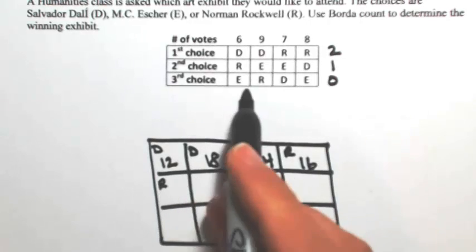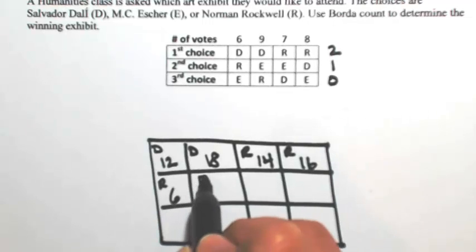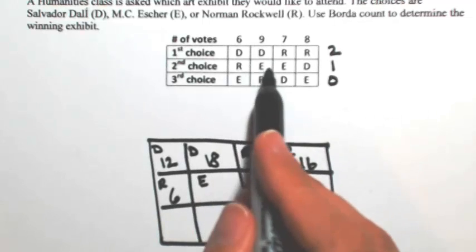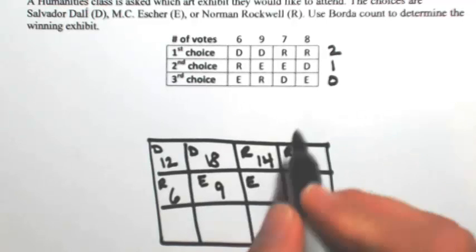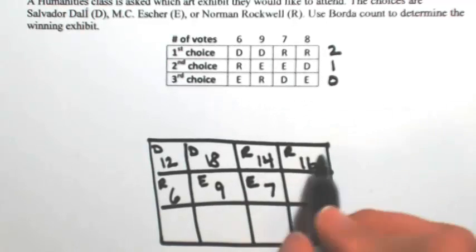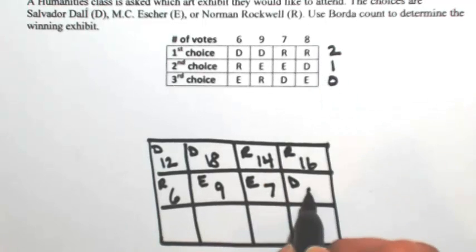In the next row there, we have R getting six votes worth one point, so six. E would have nine worth one point, so nine. E would have seven worth one. And D would have eight worth one, so eight.